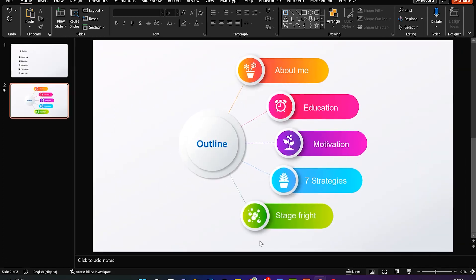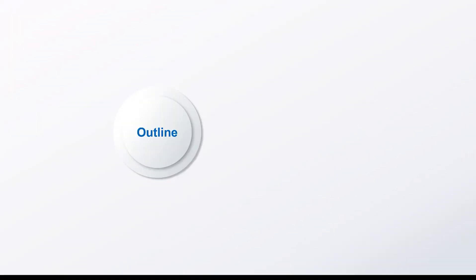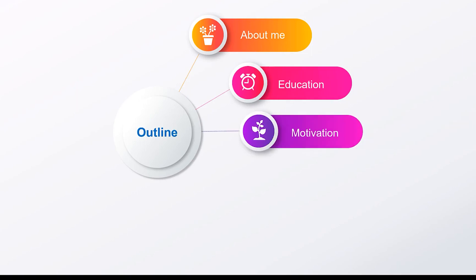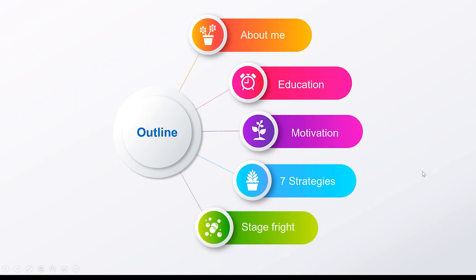Now it's plain text with animations. Let's play it and see the presentation. I'll talk about the outline, then about me — telling them my background. Next is education, then motivation — why I do public speaking and why I see it as a key soft skill. Then the seven strategies for an effective speech, and finally, key tips on how to manage stage fright. This looks cool and fantastic — a great example of customizing a template with animations.